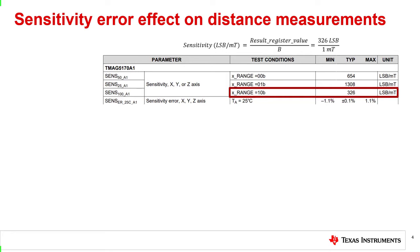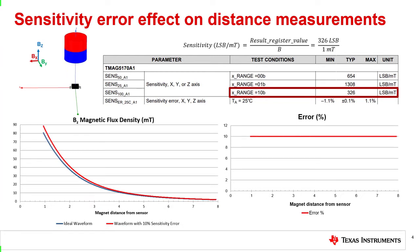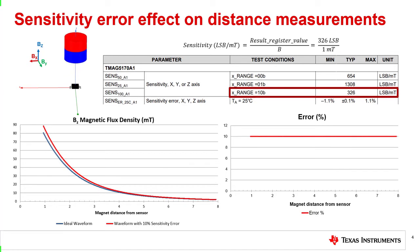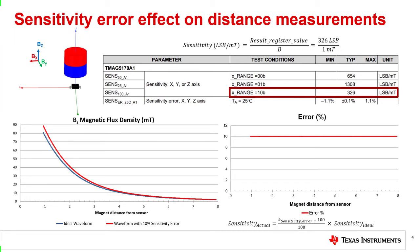The sensitivity error spec represents the percent error between the ideal sensitivity and the sensitivity seen on a particular device — essentially like a gain error. In the bottom graphs, you see the effect of sensitivity error on the magnetic flux density measurements of a magnet moving in the z direction. For this example, a 10% sensitivity error is added to the ideal waveform. The sensitivity gain error causes a constant error seen at low and high amplitudes. This magnetic flux density error affects the mapping of the magnetic flux density to distance. The actual sensitivity can be calculated by the equation on the bottom right, where k sensitivity error is the sensitivity percent error and sensitivity ideal is the ideal sensitivity.